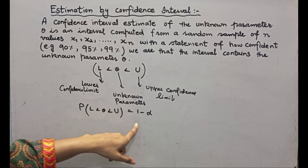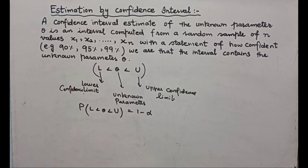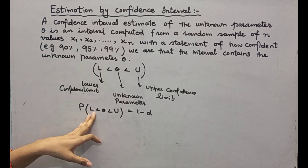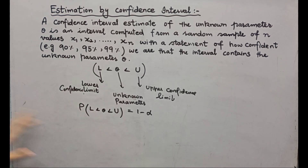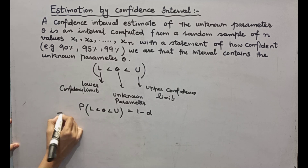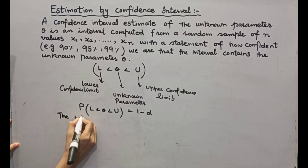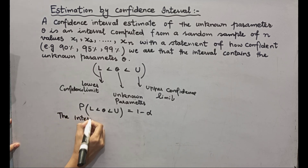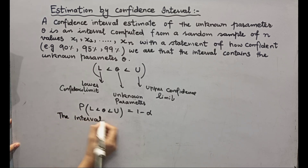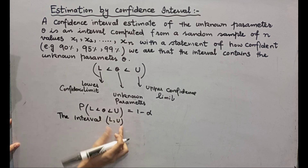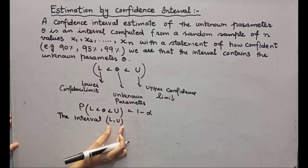So within the interval, 1 minus alpha is shown here. This is the interval which contains the other population parameters.